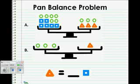So here's our problem. Six circles and six squares is equal to three circles and three triangles. The second clue is telling us that three circles is equal to one triangle. What we are trying to find out is how many squares equals one triangle.